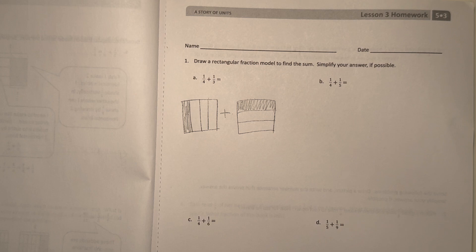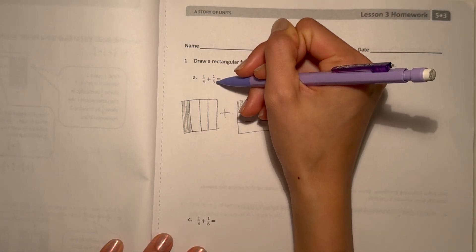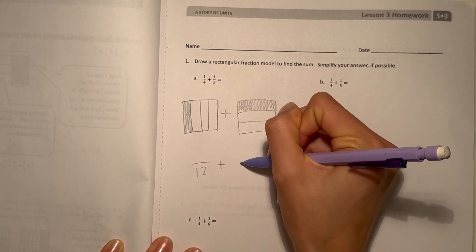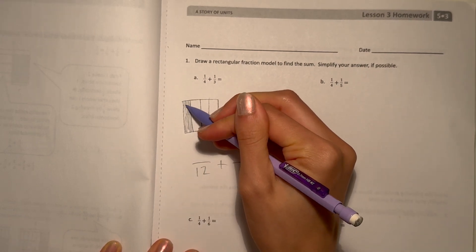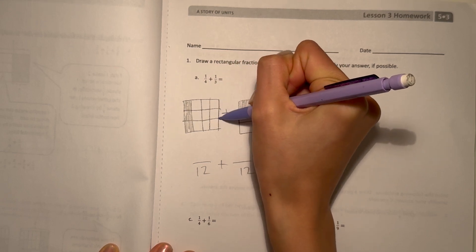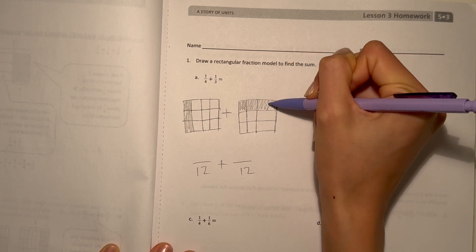So now, we notice the bottom number, I think the denominator, they're different. So we have to make them the same. And the common multiple here, twelve, we convert them into twelfths. So basically, one-fourth, you're going to multiply that by three. So that's, we split into three. And that one-third, we split it into four more sections.